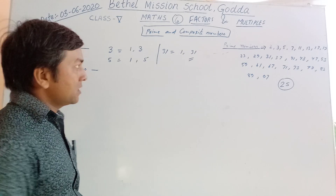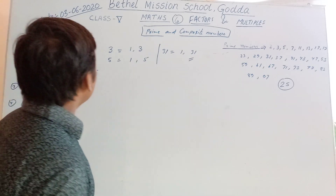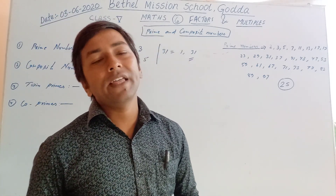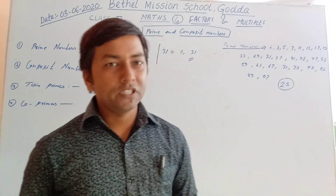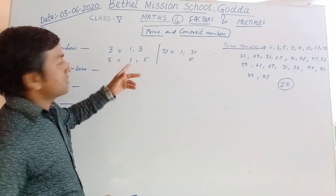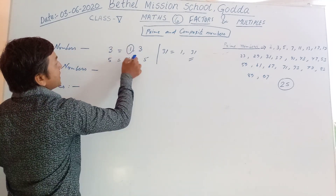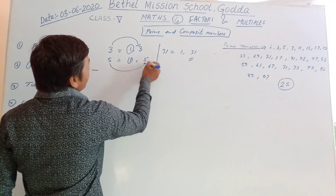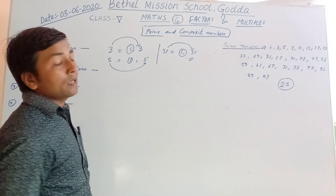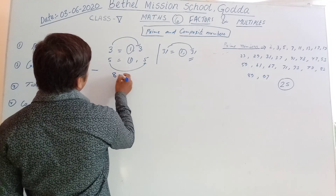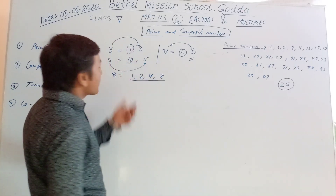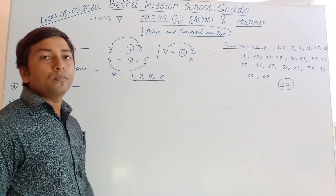Now, composite number. What is composite number? A number having more than two factors is called a composite number. Prime numbers have only two factors: one and itself — one is compulsory and that number. Any number having more than two factors is composite. Suppose that eight: one table, two tables, four tables, and eight tables — four factors. Then eight is called a composite number.